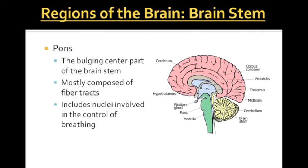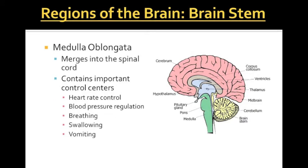The major job of the pons is to regulate breathing — just memorize that. The medulla oblongata is responsible for heart rate, blood pressure, and assists with breathing, though the pons is the main source for respiratory control. The medulla also controls swallowing and vomiting.